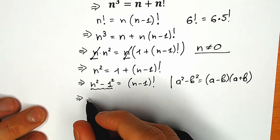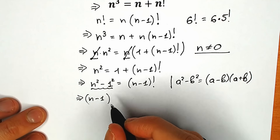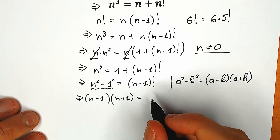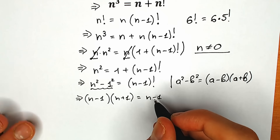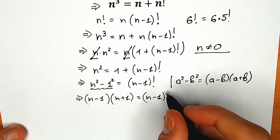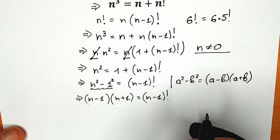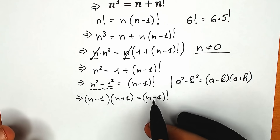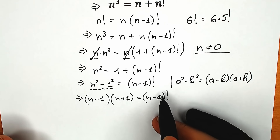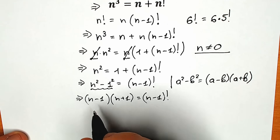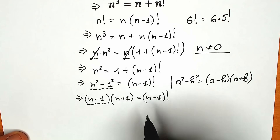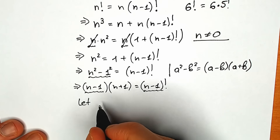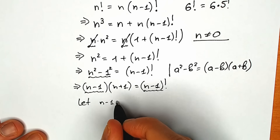Applying the difference of squares, we get (n−1)(n+1) equal to (n−1) factorial. Now I'll use a substitution method since n−1 appears on both sides. Let n−1 equal y, so n equals y+1.